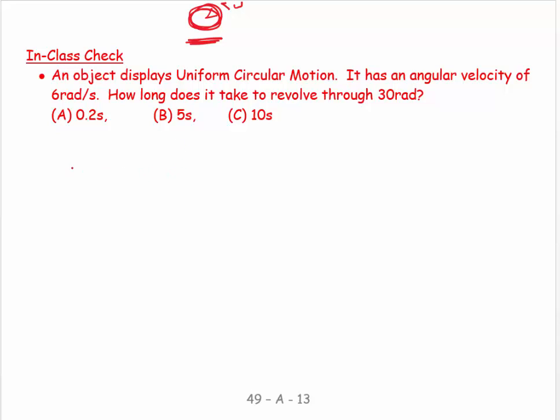An object displays uniform circular motion. It has an angular velocity. So omega is equal to 6 radians per second. How long does it take to travel through a theta, an angle of 30 radians? So this is not 30 radians. 30 radians is about five times around this. But let's say that's the angle. And I know my omega is that, and I want to know the time. And most people, when they look at that, they pause, they hesitate, because it's very unfamiliar.